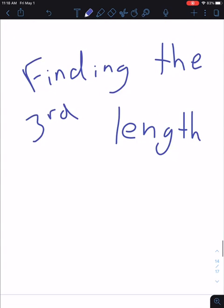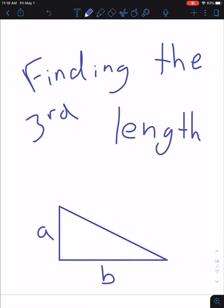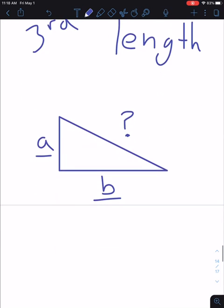So when we have a triangle, we have two legs and a hypotenuse. Usually we know what these two lengths are and we don't know what the hypotenuse is, and we find that by doing a squared plus b squared equals c squared.